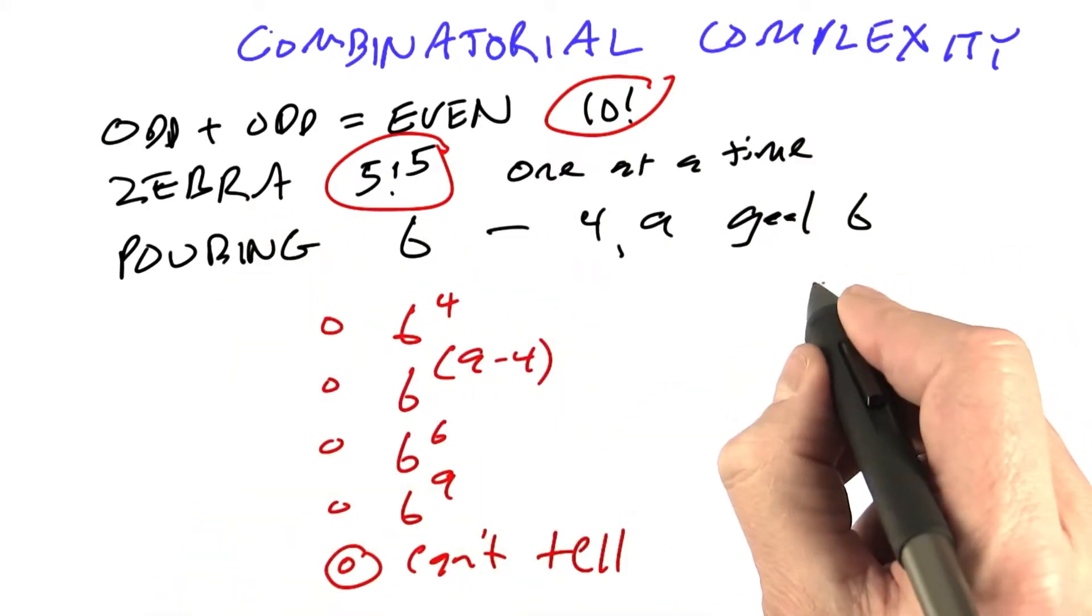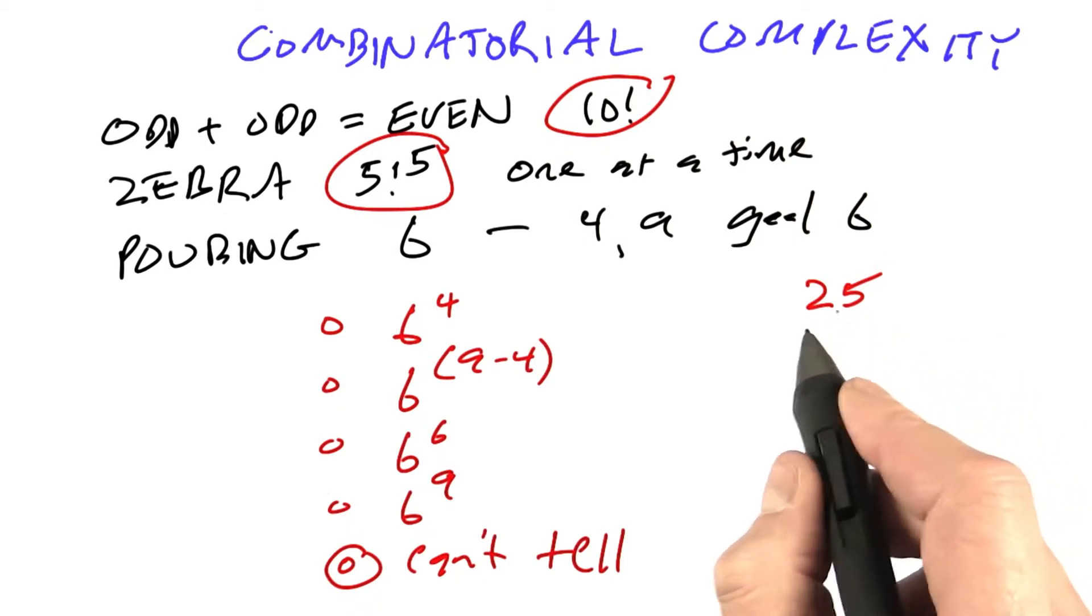In the zebra problem, there were 25 variables, and that's all there was. We could enumerate all the combinations.